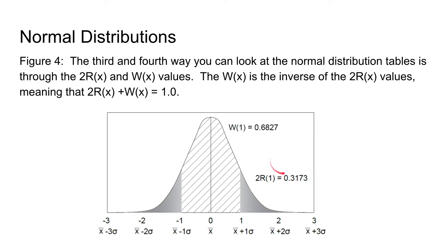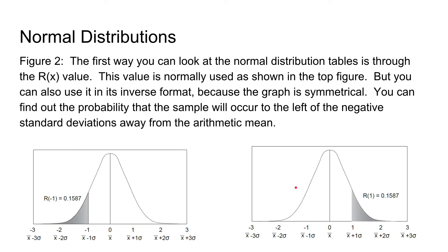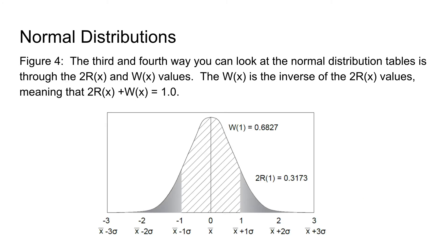So as you can see for one, it actually doubled the values and it gives you the value directly so you don't have to multiply it. So 0.3173. If you remember from R, one was 0.1587. So double that and we get the 0.3173. And then if we look at the W values, it's one minus this value, the area inside of the standard deviation values.